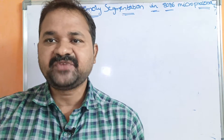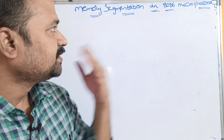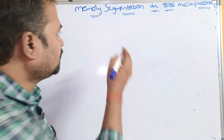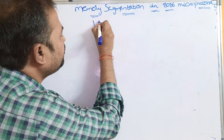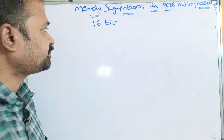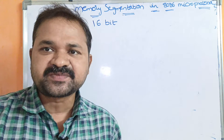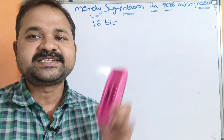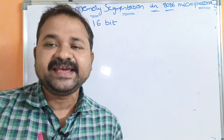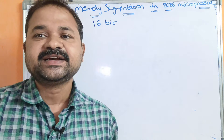In this video, we are going to discuss about memory segmentation in the 8086 microprocessor. We know that the 8086 is a 16-bit microprocessor, meaning the microprocessor performs operations on 16-bit data. The size of each register in the 8086 microprocessor is 16 bits.